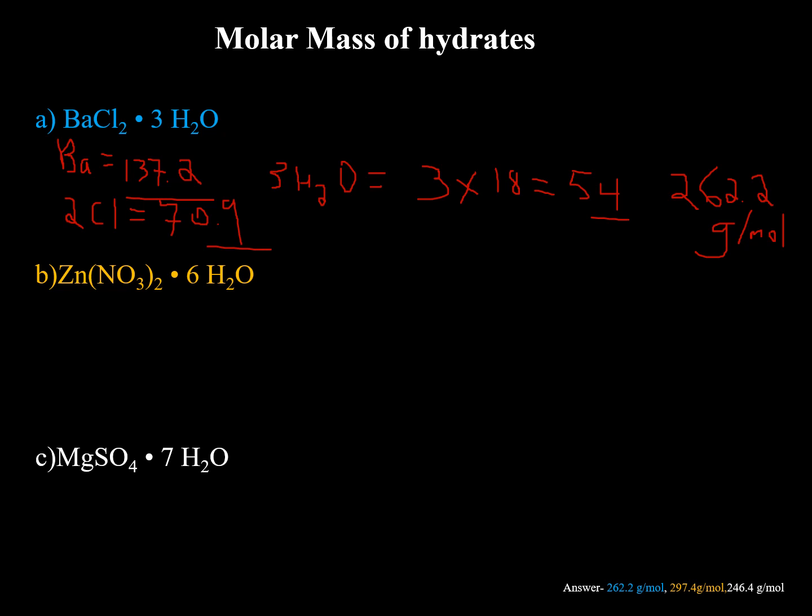Okay, the next example is zinc nitrate hexahydrate. So again, we have one zinc element. So that's 65.41. Got this from the periodic table. We look at the nitrogen. There's two of them. So for the nitrogen, two times 14 is equal to 28. We have six oxygens. So six times 18.